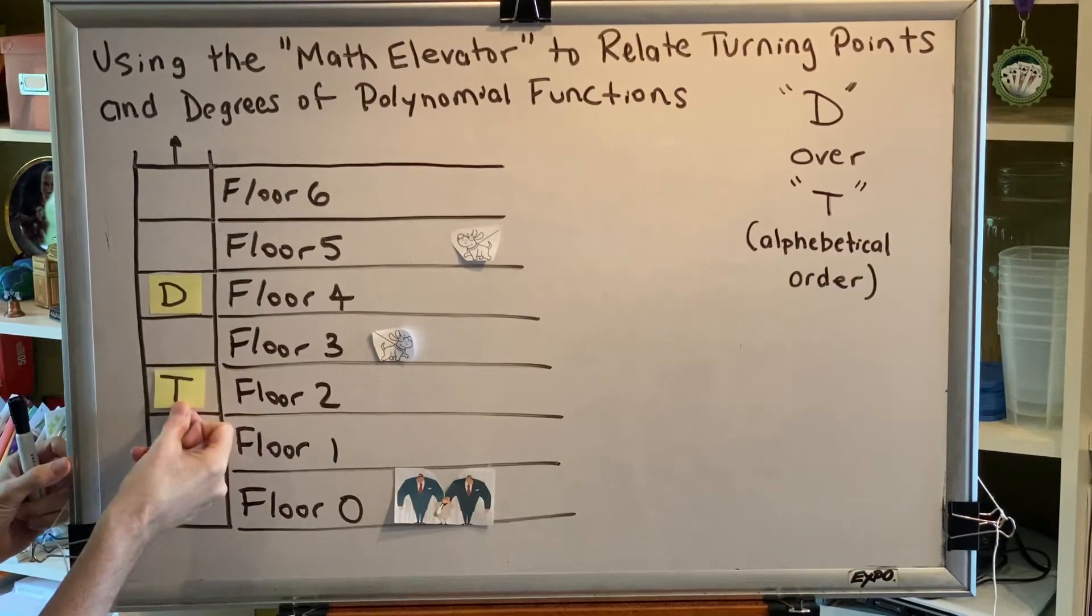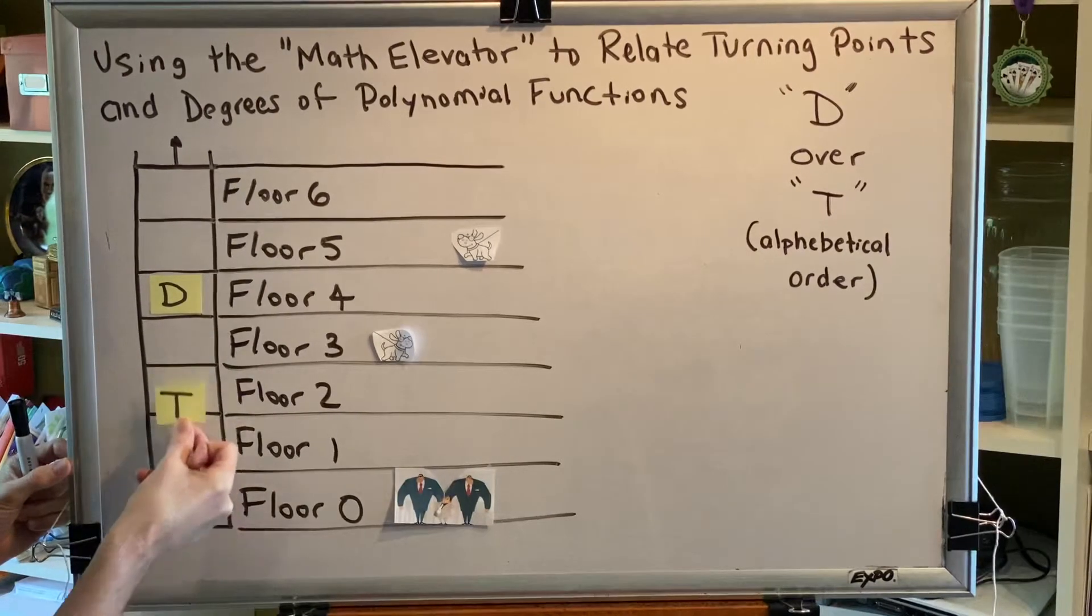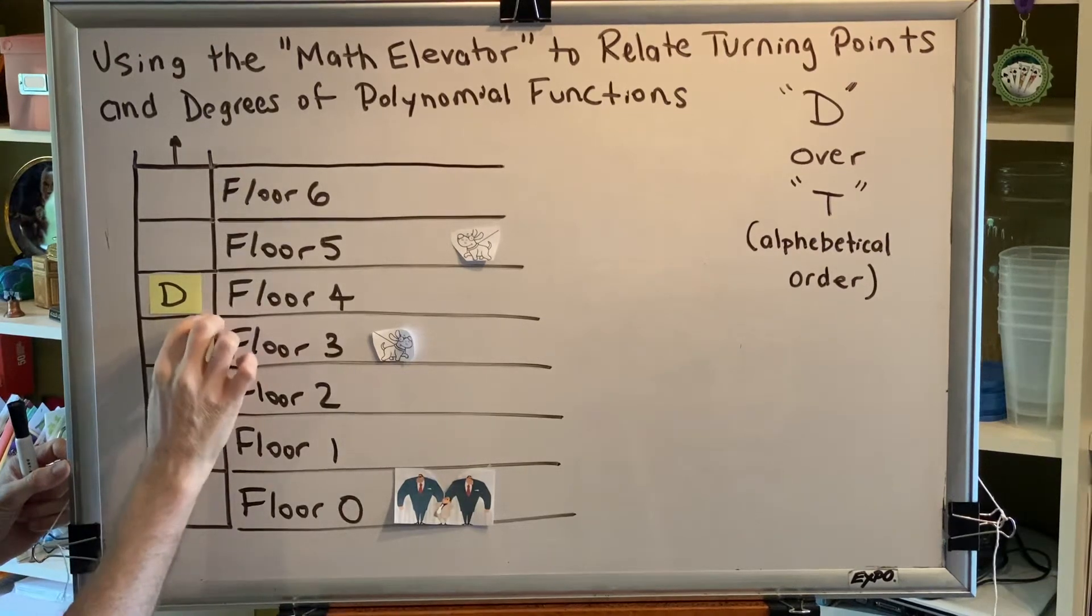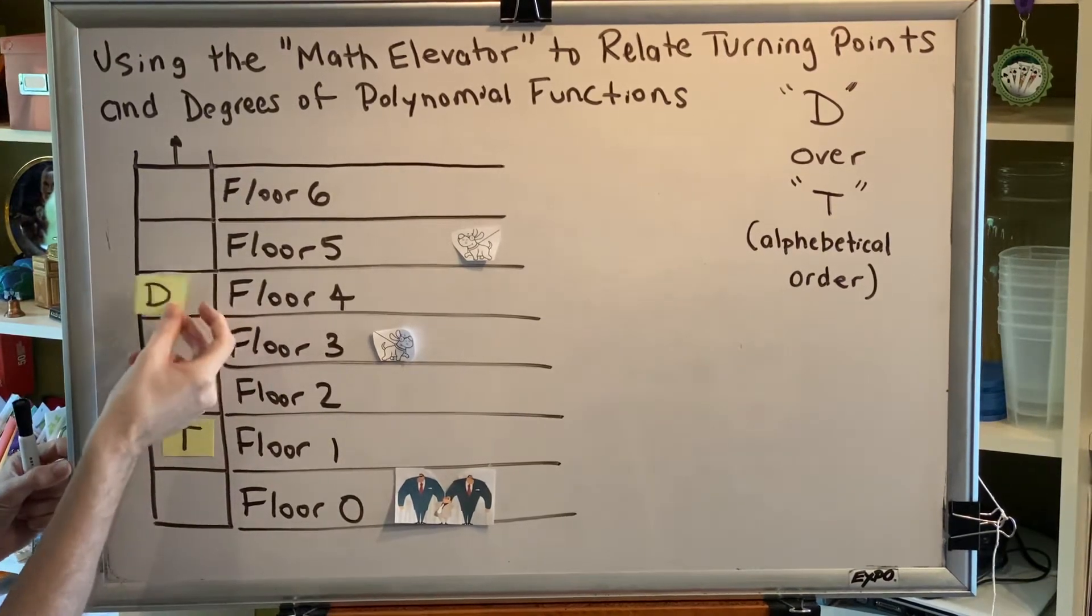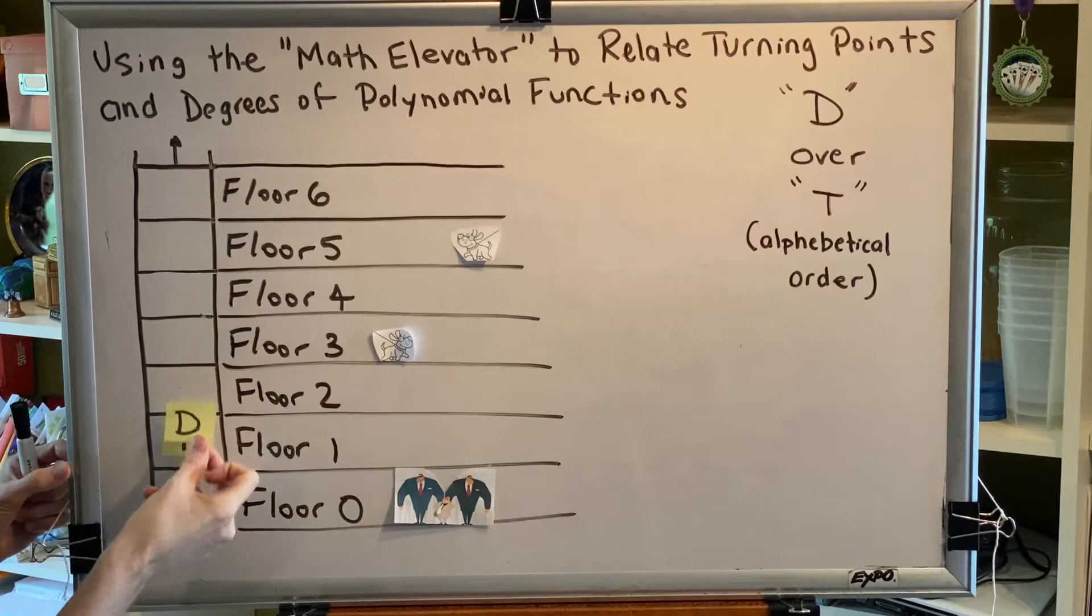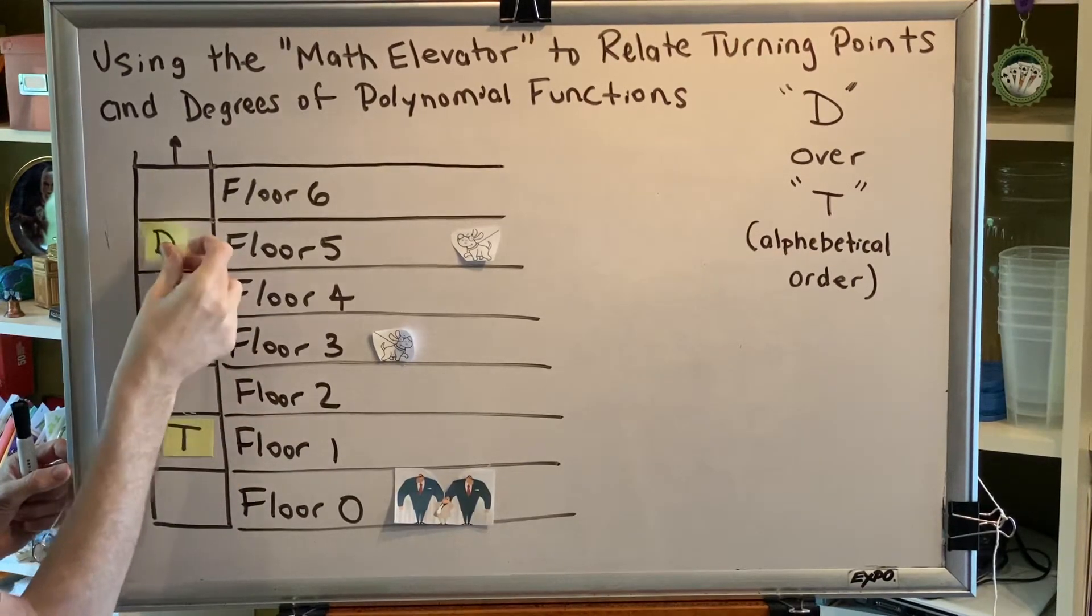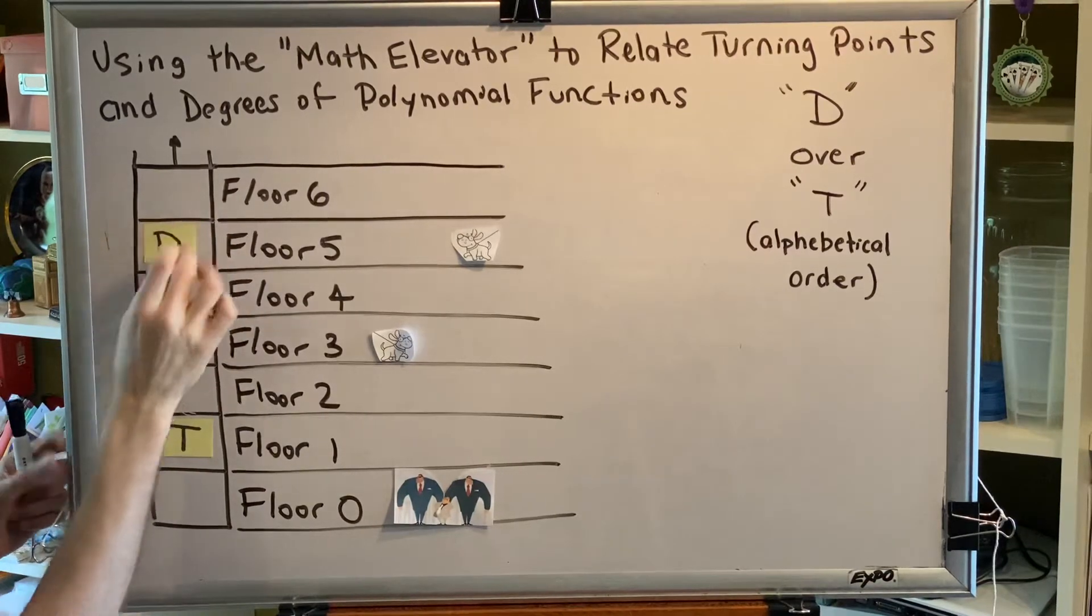So when the D car is up here on the fourth floor, the T car can move up and down on floor 0, 1, 2, and 3, and when the T car is on the first floor, the D car can move up and down, but it can't go any lower and it can't occupy the same space. These two cars can move up and down in the same elevator shaft.